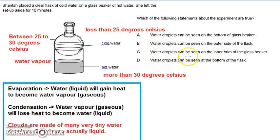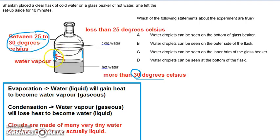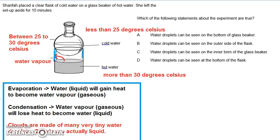Let's look at option C — water droplets can be seen on the inner brim of the glass beaker. There is hot water vapor inside the beaker because it came from the evaporation of the hot water. When this hot water vapor touches the inside of the brim, that area is usually the same temperature as the air outside, about 25 to 30 degrees. So from 30 degrees touching a surface of 25 to 30 degrees, there will be a heat loss, and therefore there will be water droplets forming there. So option C is correct as well.